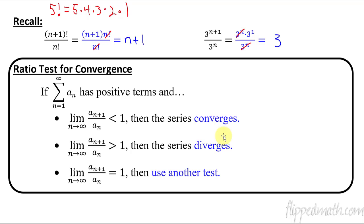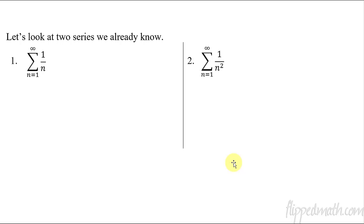So there is the main things for the ratio test of convergence. So let's look at a couple of series that we already know, and that is this one here. If you remember, this is a harmonic, and we've worked with this before when we did p-series, and we actually know that this thing diverges. And this, we know that one converges.